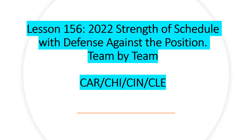So today I'm talking about strength of schedule. Lesson 155 started with the first four teams. I'm continuing with the next four: Carolina, Chicago, Cleveland, and Cincinnati. I will circle and get deep into my position and look at the blocks of the season with some more lessons later, but I'm going through all the teams at this level — kind of a landscape — and then I'll drill down a little bit.